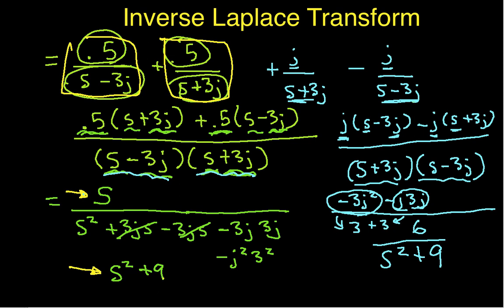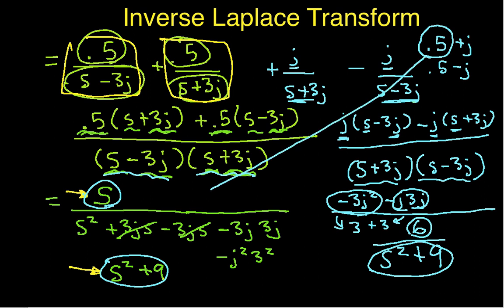And you'll recall that the 6 over S squared plus 9 transforms to 2 sine 3T times U of T. So what we've done is gone to an awful lot of work and effort to get this S over S squared plus 9 and the 6 over S squared plus 9. But it turns out that this is actually still a useful thing because I can look at my original coefficients, which I had a 0.5 plus J and I had a 0.5 minus J. You'll notice that this 0.5 is half of the coefficient in front of the S over S squared plus 9. And you'll know that the 1 that's multiplying the J here is half of the coefficient that ends up in front of the sine.